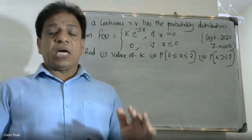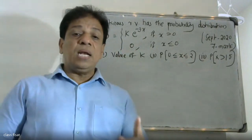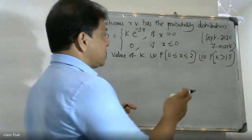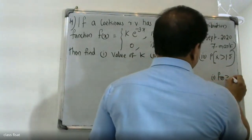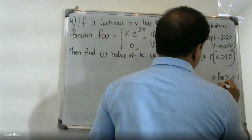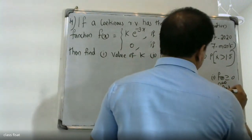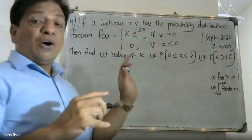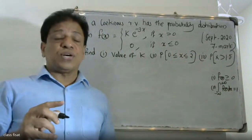For a function f(x) to be a valid continuous random variable probability density function, it must satisfy two conditions. First condition: f(x) ≥ 0. Second condition: the integral from minus infinity to plus infinity of f(x) dx is equal to 1.